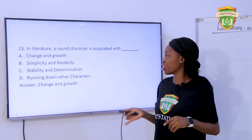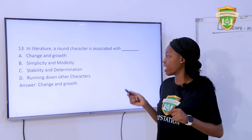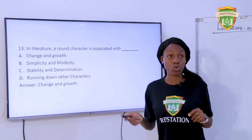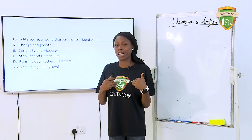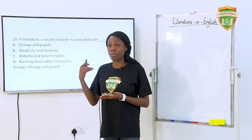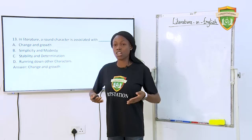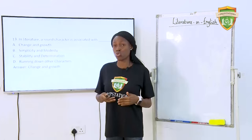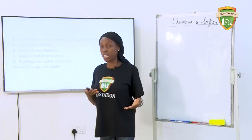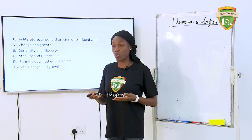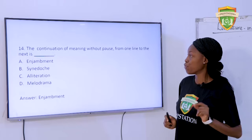In literature, a round character is associated with — A. Change and growth. B. Simplicity and modesty. C. Stability and determination. D. Running down other characters. The answer is change and growth. In a novel or play, you have two major kinds of characters: a round character and a flat character. A flat character is one you can easily predict, while a round character is open for development, change, and growth. For example, in the play Fences by August Wilson, Troy could be described as a flat character, while his wife Rose and his son Corey are round characters who grow as events unfold.